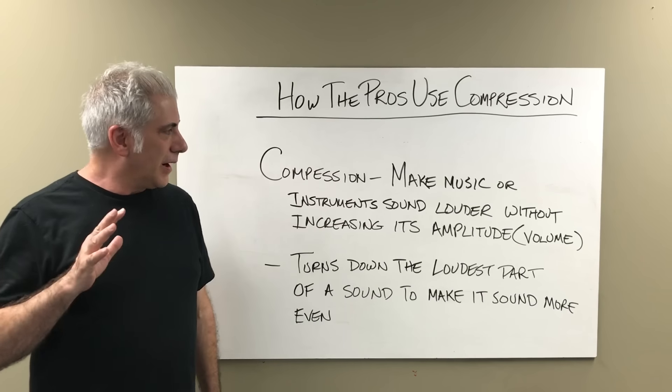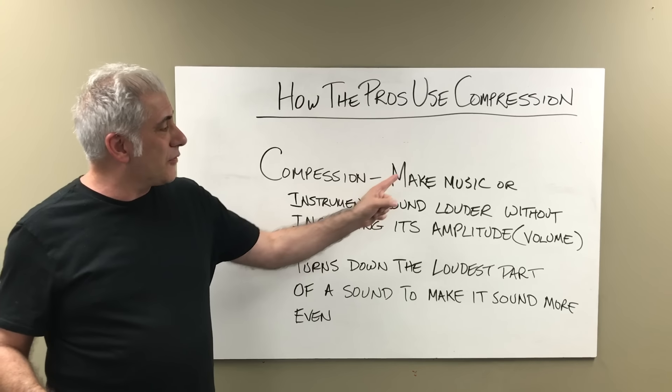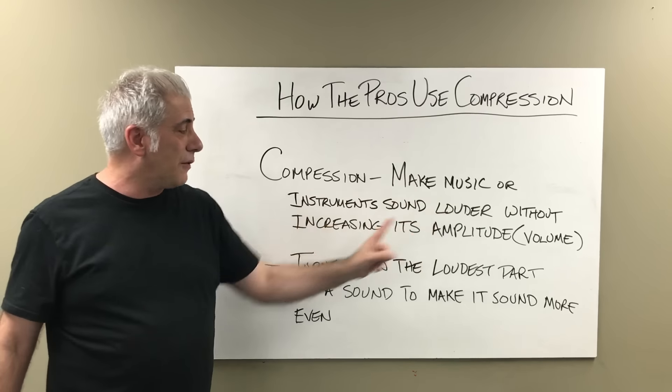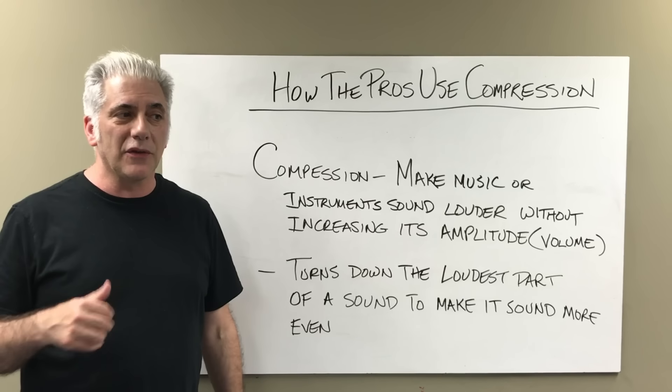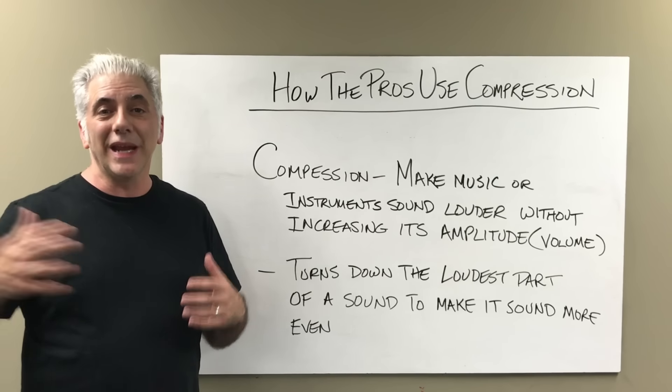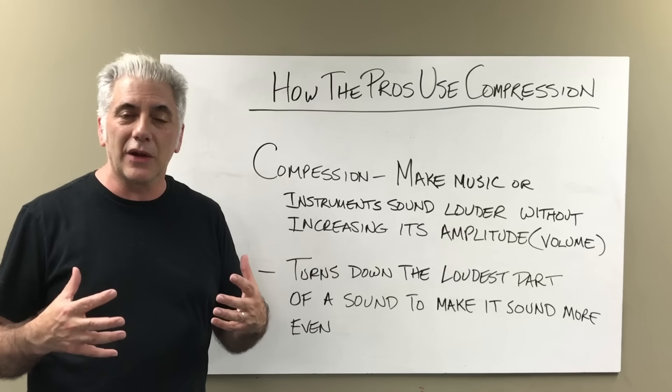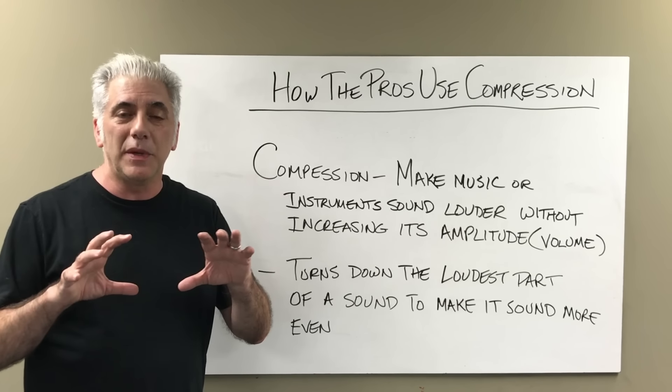So what is compression? A compressor in music is something that makes music or instruments sound louder without increasing its amplitude — amplitude is volume. It's also used to turn down the loudest part of a sound to make it sound more even or consistent. If I have a bass player where some notes are really loud and some are really soft, I'm going to compress the bass so that it's more even and sits in the mix better. If I don't compress it, it's going to sound like it's coming in and out, and you don't want the low end dropping in and out.